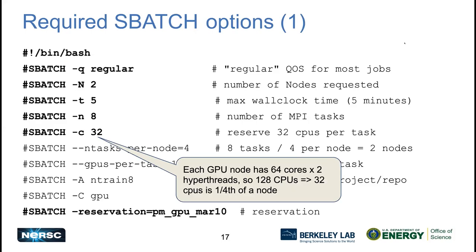The sbatch script for GPU nodes looks very similar to what you'd use on Cori or the Perlmutter CPU nodes, with a few changes. One major difference is the number of CPUs per task. On the CPU nodes you have 256 logical CPUs (128 hardware cores); on the GPU nodes you have half that — 64 hardware cores and 128 logical CPUs. For Slurm, one CPU equals one logical CPU or hyperthread. With eight total ranks across two nodes, you have four ranks per node, requiring 32 CPUs per rank.